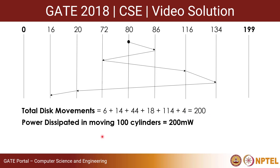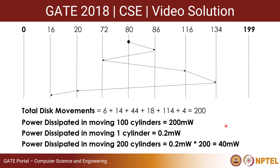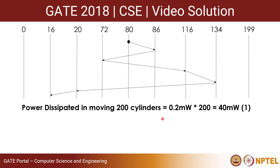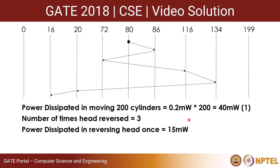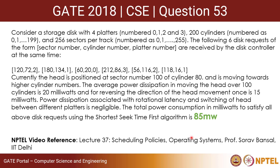Power dissipated in moving 100 cylinders is 20 mW, so moving 1 cylinder costs 0.2 mW, and moving 200 cylinders costs 0.2 × 200 = 40 mW. The head reversed direction 3 times: once at 86 going to 72, once at 72 going to 116, and once at 134. Each reversal costs 15 mW, so 3 × 15 = 45 mW. Adding both: 40 + 45 = 85 mW. The total power consumption to satisfy all requests using the shortest seek time first algorithm is 85 mW.